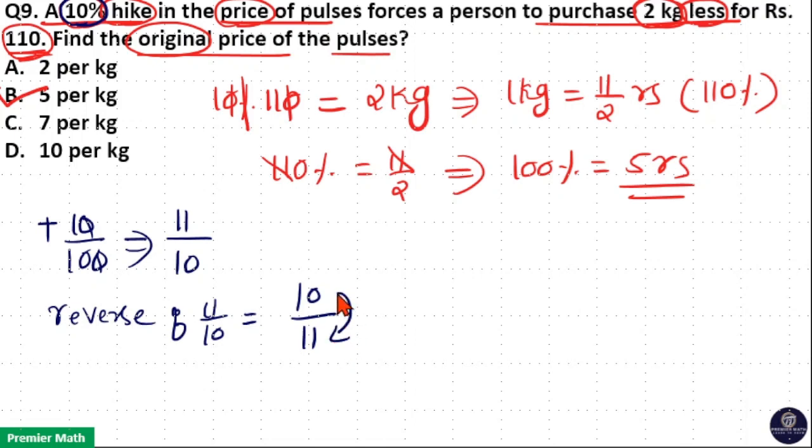Here difference between 10 part and 11 part is equal to 1 part. Now the quantity difference in question is 2 kg. So 1 part is equal to 2 kg. If 1 part is 2 kg, 10 part is 20 kg and 11 part is 22 kg.